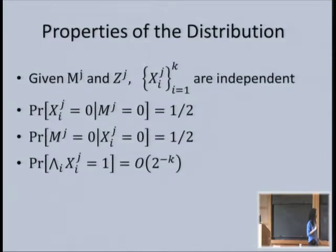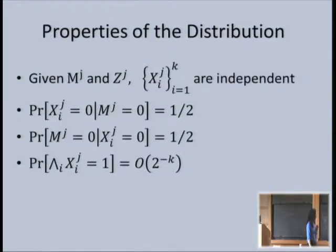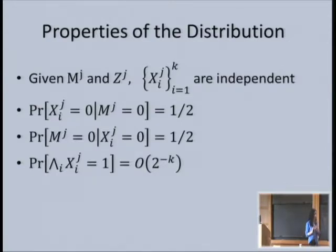We're going to show that either the coordinator learns about the inputs or the players learn about the mode—and in either case, there's a full bit to be learned there by each player. Also, this distribution is extremely unlikely to yield a one in any particular coordinate, which will be useful in the direct sum theorem. The protocol must have error ε in the worst case, not over this distribution.